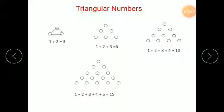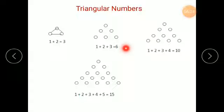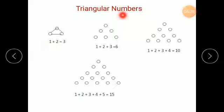Here in the first figure there is 1 dot; here is 1 and 2. In the next row: 1, 2, and 3. Then: 1, 2, 3, and 4. So the number of rows tells us how many numbers there are. Here 2 rows means 2 numbers; 3 rows means 3 numbers; 4 rows means 4 numbers.